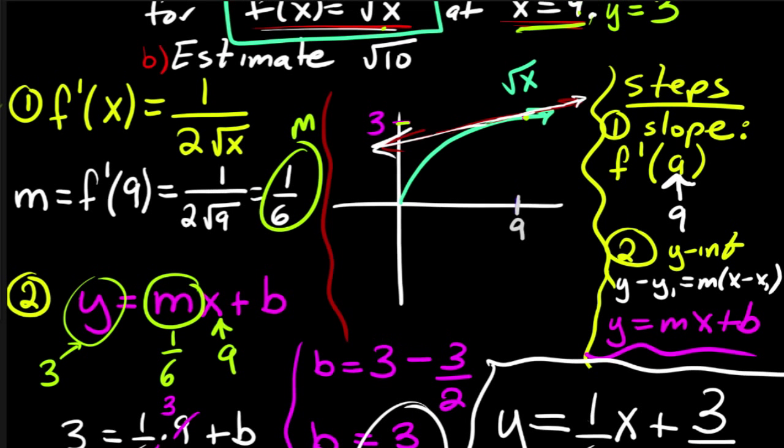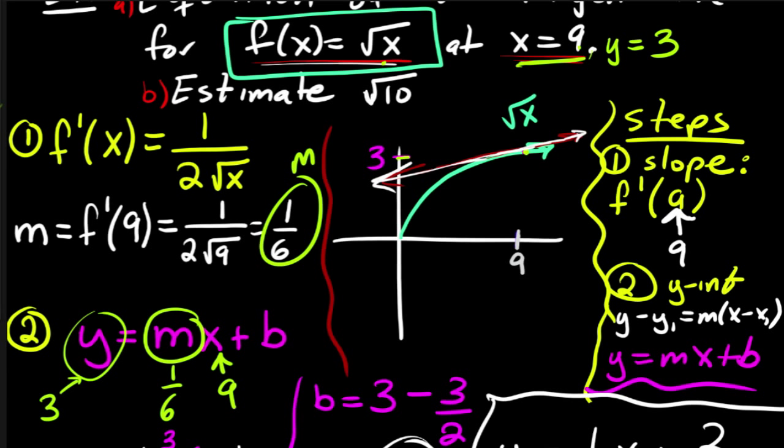And then the question is, well how do I estimate square root of 10? Well, square root of 10, you'll notice, is, so if 10 is right here, then square root of 10 is going to be right around there. But notice, notice this is key, that my tangent line at 10 is very, very close to square root of 10, which is down here.